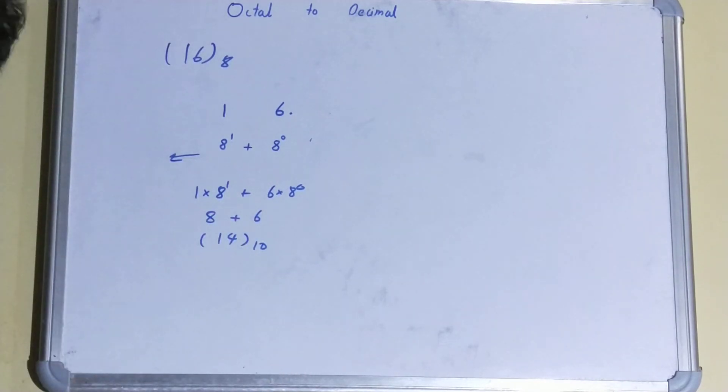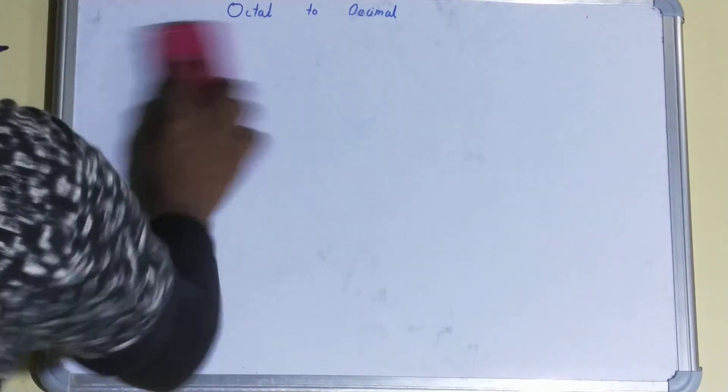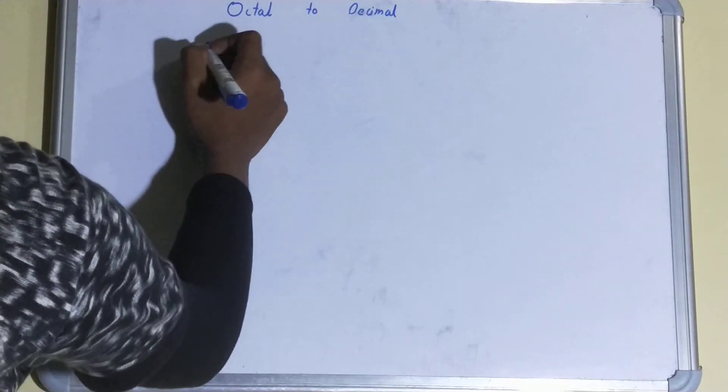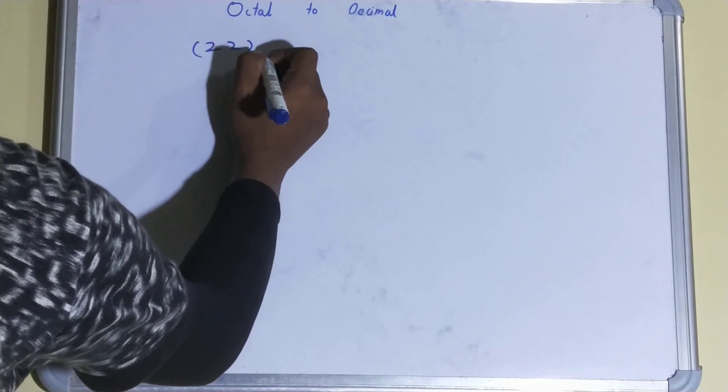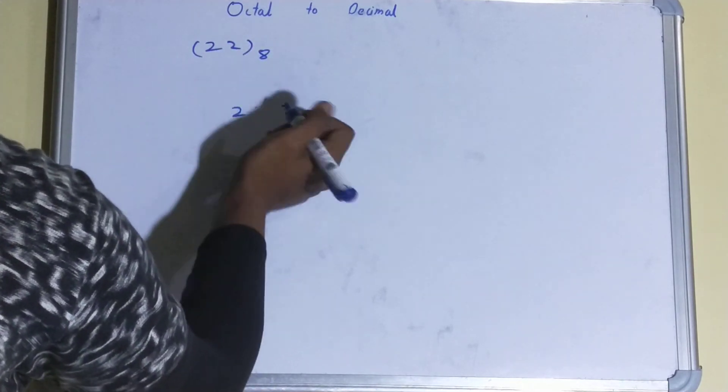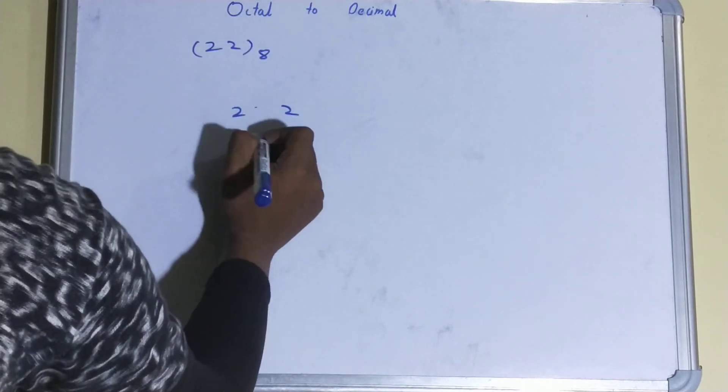Okay, let's take another example. If there is a number like 22 base 8, okay, so again we'll do the same thing.